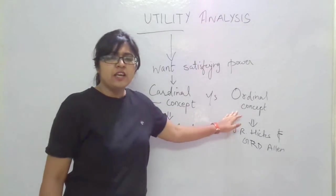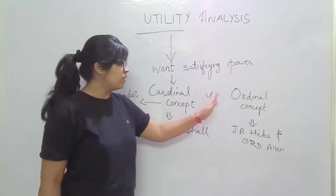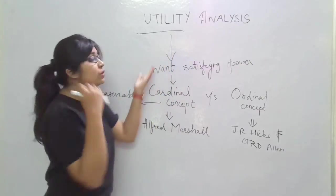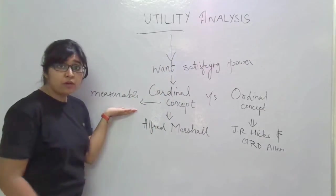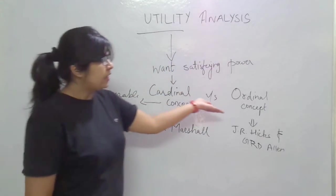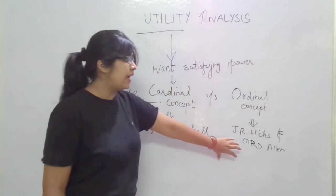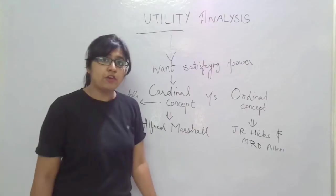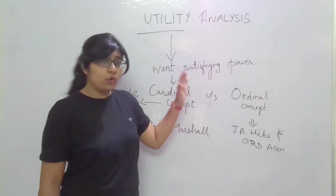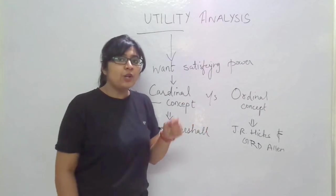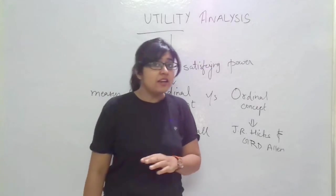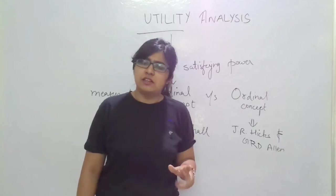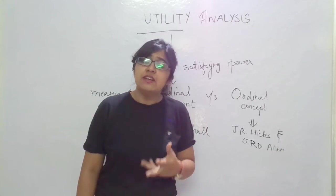Now what does this ordinal concept mean? Of course it will be different from the cardinal concept which said that utility is quite measurable or quantifiable. The ordinal concept given by Hicks and Allen, another couple of economists, said that no, utility cannot be measured. It is not a measurable concept. Then what is utility? How can you measure satisfaction?